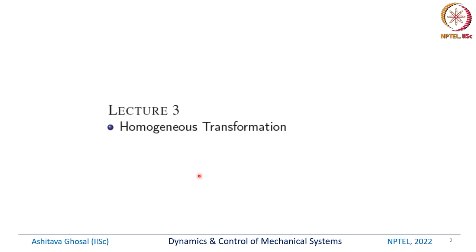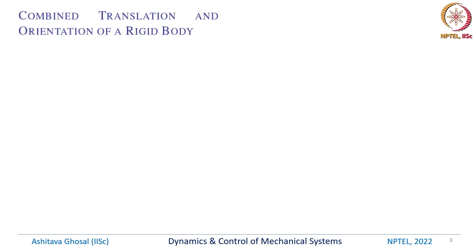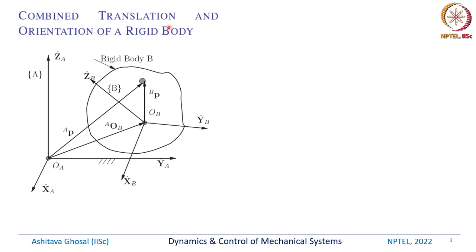The last topic this week is what is called homogeneous transformation. As its name implies, it is a combined translation and orientation of a rigid body. We have a reference coordinate system XA, YA, ZA with origin OA, and we have a rigid body whose origin is not at OA — it has gone to another point located by the vector AOB. So XB, YB, ZB is different from XA, YA, ZA, and the origin has moved from OA to OB. A point on this rigid body is given in the B coordinate system by BP, and we will see how to express this vector in the A coordinate system.